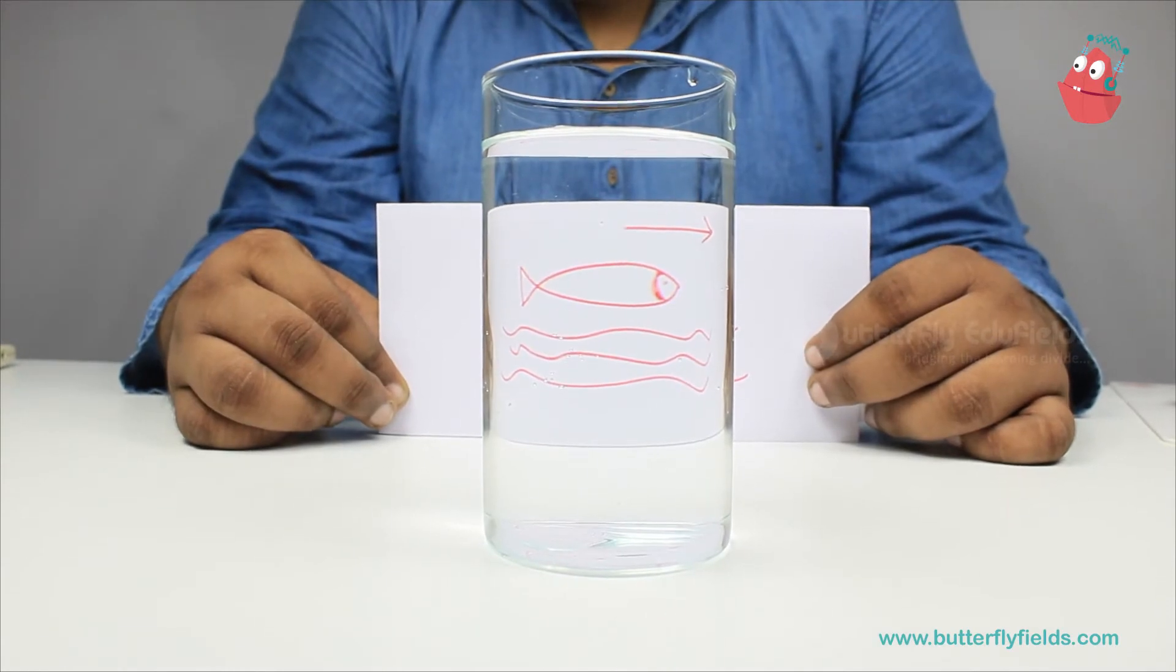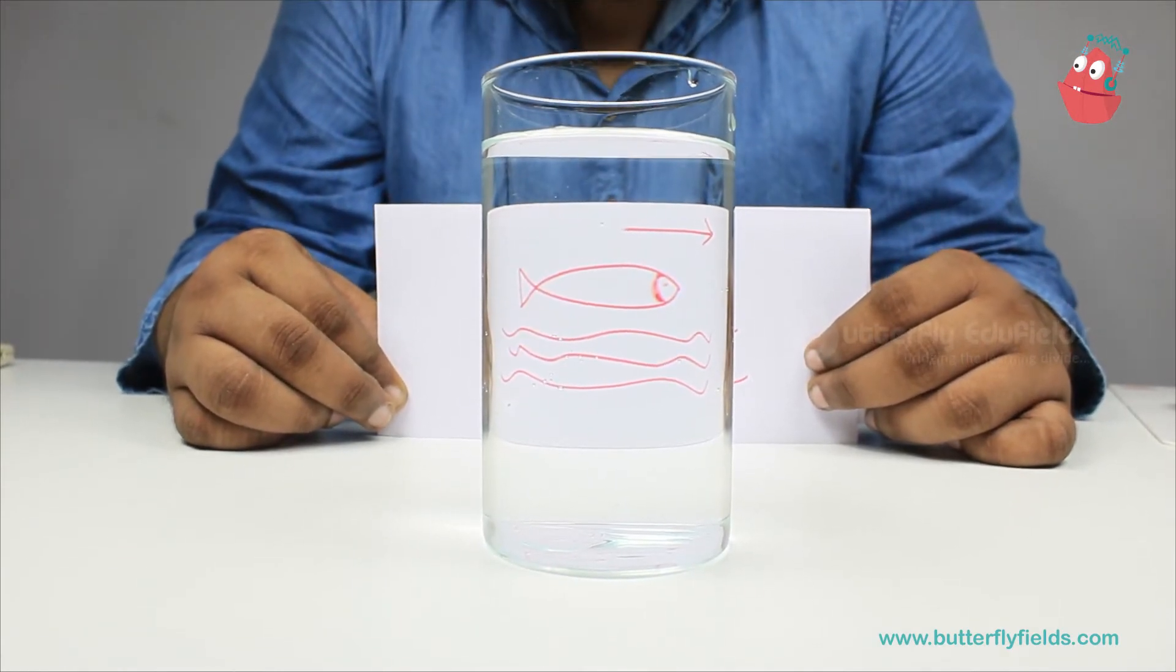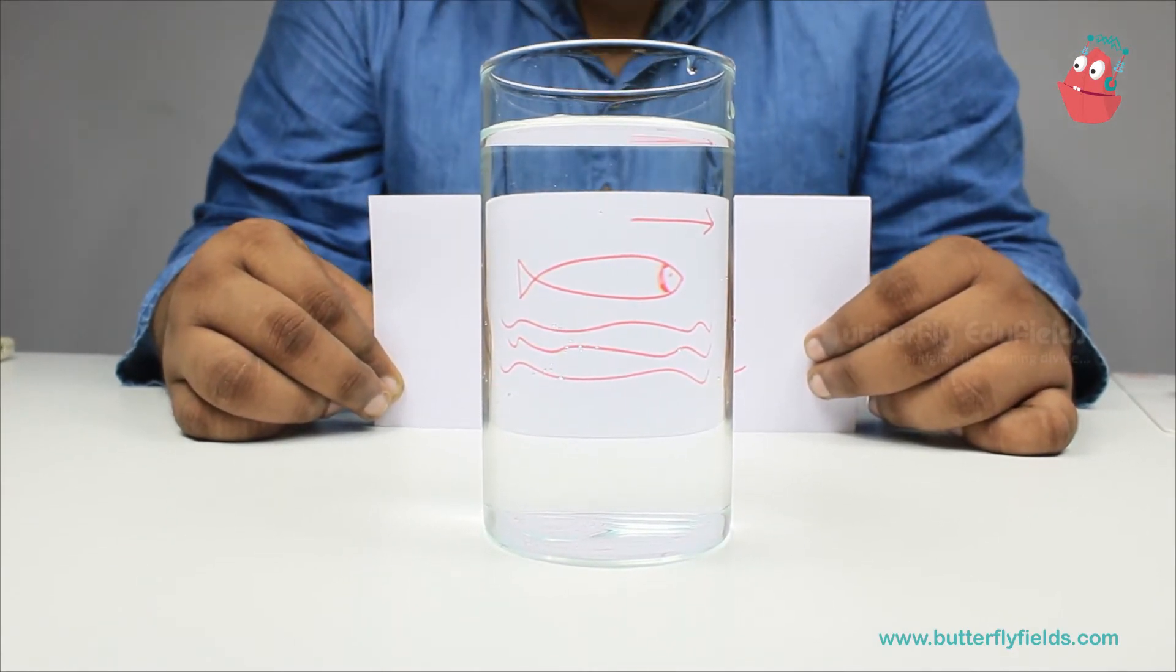When you look through the water, the direction of the fish has reversed. Now, the little fish can go to its home.